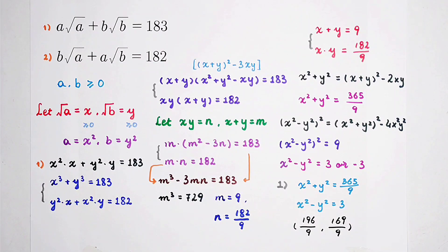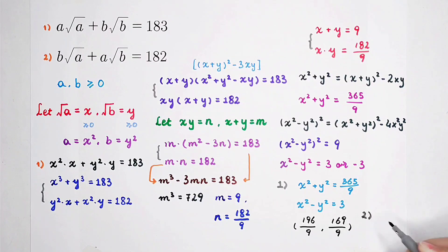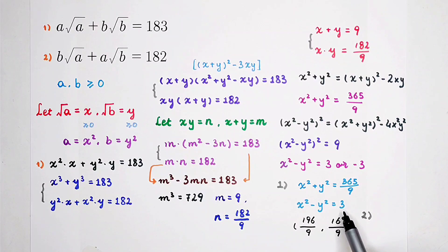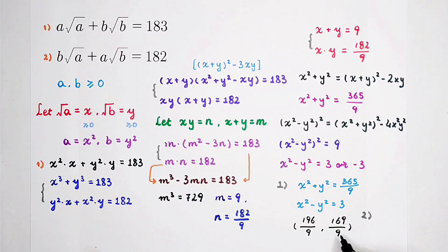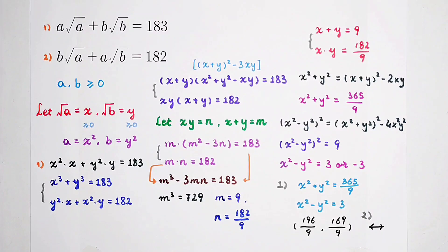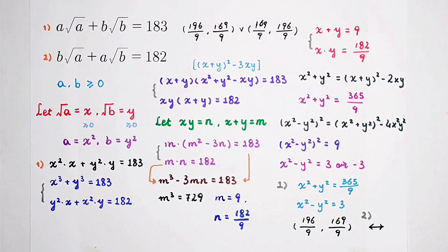Of course, we also have the second case. In the second case, x squared minus y squared is negative 3 instead of 3, and we get the solution pair where these two numbers swap their orders. Subscribe to my channel for more videos, and we'll see you next time. Bye-bye!